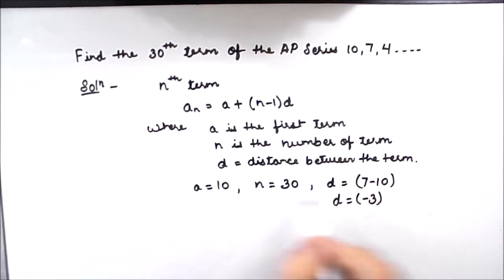So let us substitute these values in the formula. The 30th term is a which is 10, plus n is 30 minus 1, times negative 3.